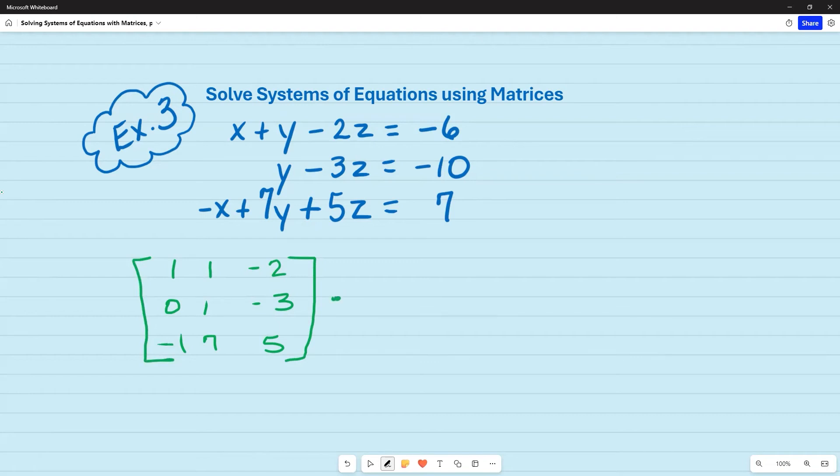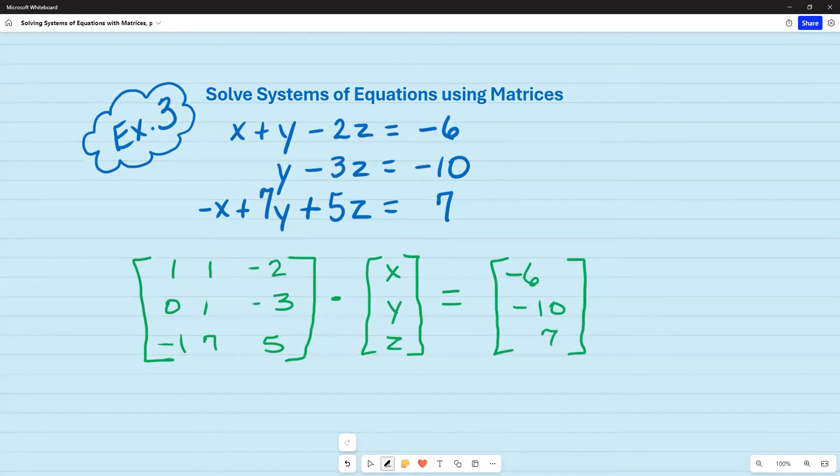I'm going to multiply this times x, y, z. And then I'm going to set this equal to the constant matrix, negative 6, negative 10, and 7. So let's go ahead and label these. This is going to be matrix A, matrix X, and matrix B.